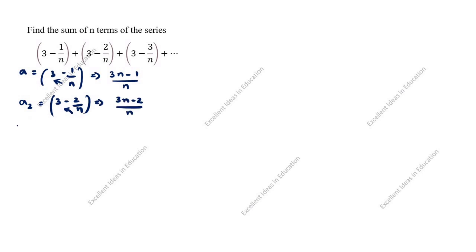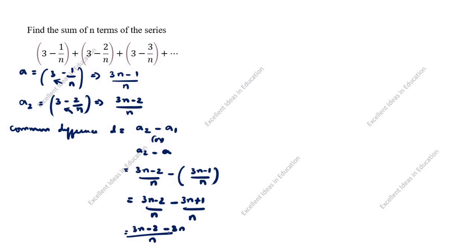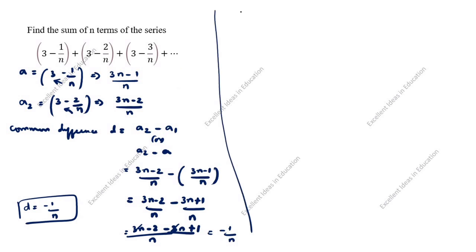Now we find the common difference d = a2 - a1. So d = (3n - 2)/n minus (3n - 1)/n. Removing the bracket: (3n - 2 - 3n + 1)/n. The 3n terms cancel, leaving d = -1/n.